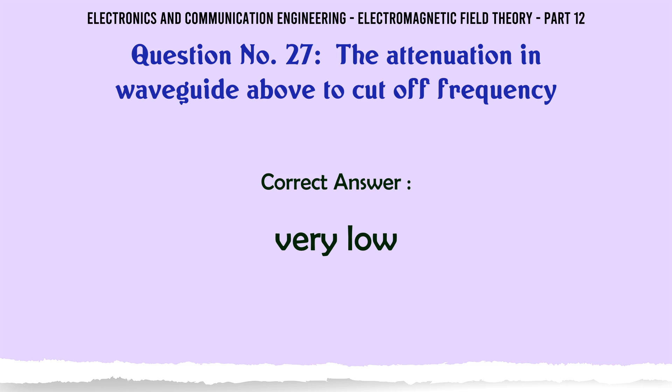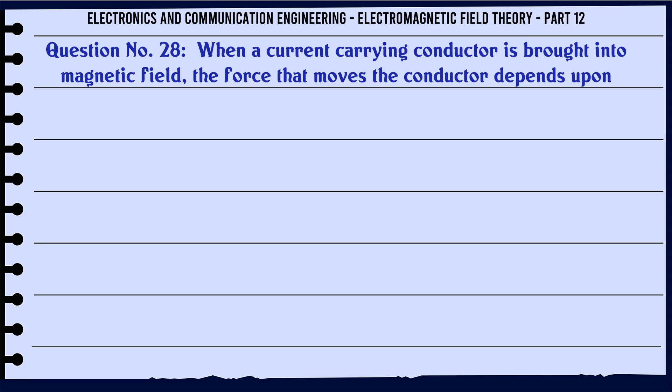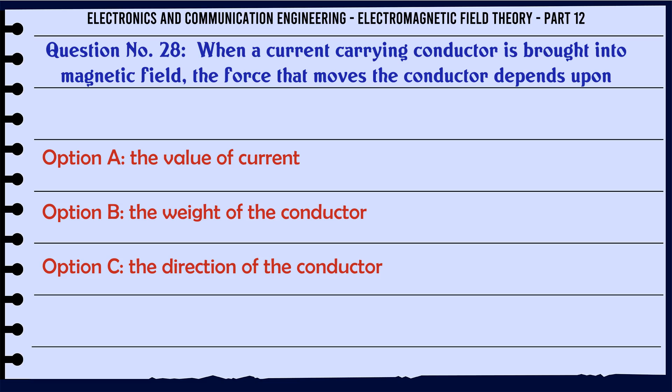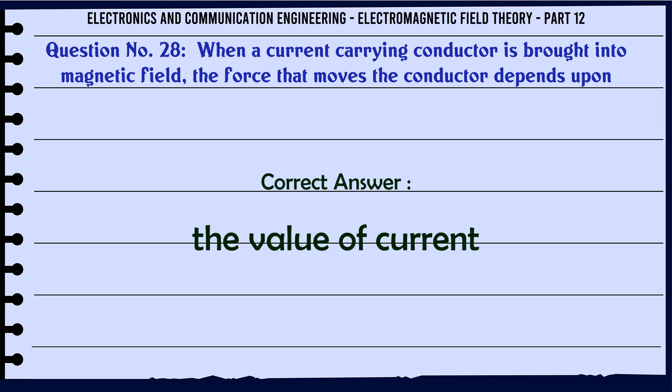When a current-carrying conductor is brought into a magnetic field, the force that moves the conductor depends upon: A. The value of current, B. The weight of the conductor, C. The direction of the conductor, D. None of the above. The correct answer is The value of current.